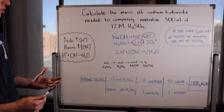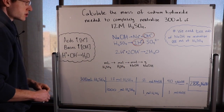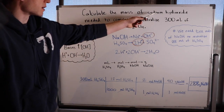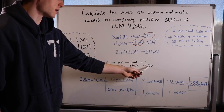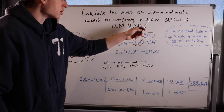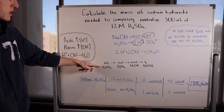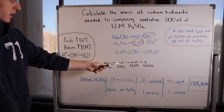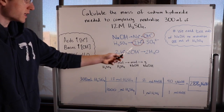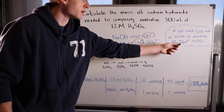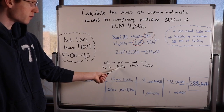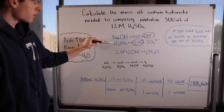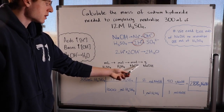We have to fit this problem into a general path to get the mass of sodium hydroxide. We want to end up in grams of NaOH. They gave us a volume of H2SO4 in milliliters, and since they gave us 12 molar molarity, we can get to moles of H2SO4. From there, we cross the mole bridge — we need two moles of NaOH to neutralize one mole of H2SO4. Then finally we can go from moles to grams of NaOH.